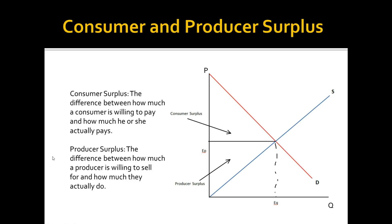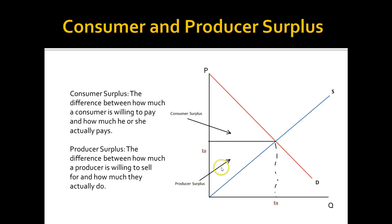Consumer surplus and producer surplus also exist in perfect competition and can be seen on the graph. Consumer surplus is the area under the demand curve but above the equilibrium price — a consumer is willing to pay more but only pays the equilibrium price, and the consumer surplus is the total area representing all such consumers. Producer surplus is the area above the supply curve but below the equilibrium price — a producer is willing to sell for a lower price but ends up selling at the equilibrium price, and that whole area is the producer surplus.